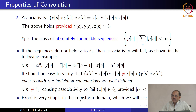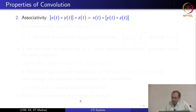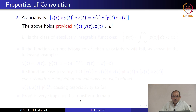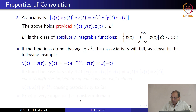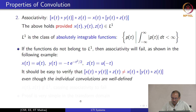This is the counterpart for continuous time signals. Again, we assume associativity provided the functions belong to L1, the space of absolutely integrable functions. Here is an example where associativity will fail in the continuous time case. You can verify that each individual convolution is well defined and the answer will exist, but associativity will not hold because it violates the requirement for associativity to be valid.